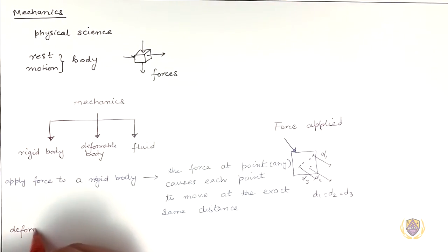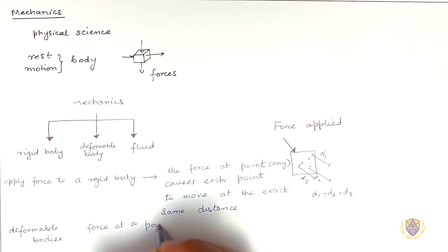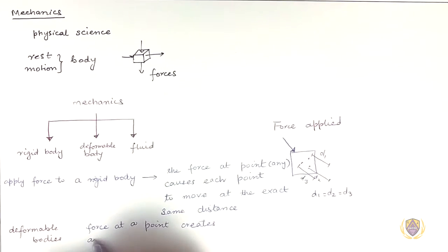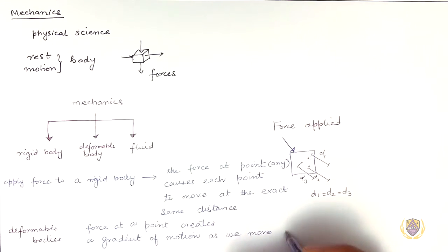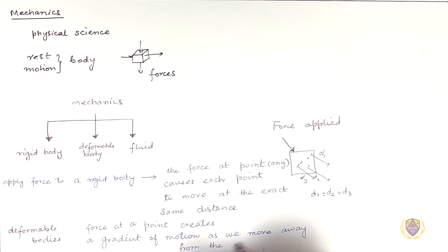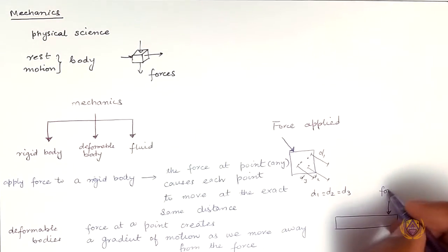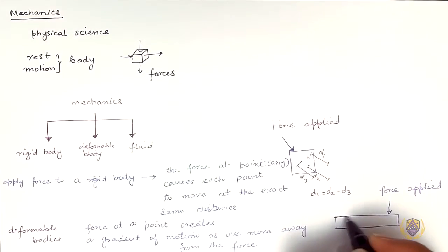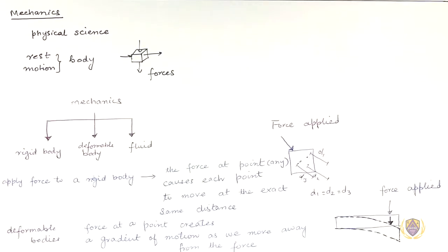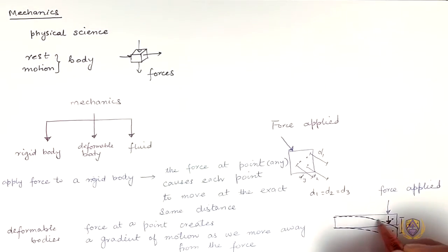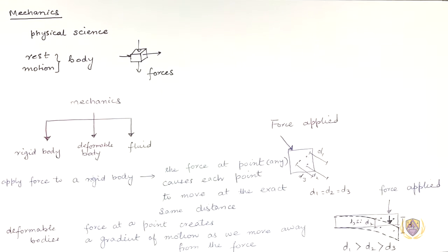For deformable bodies, the force creates a gradient in the motion of points within the body as you move away from the point of force, as seen in the figure. The displacement at the point where the force is applied is greatest, and this decreases away from the point of force, such that distance 1 will be greater than distance 2, which will be greater than distance 3.